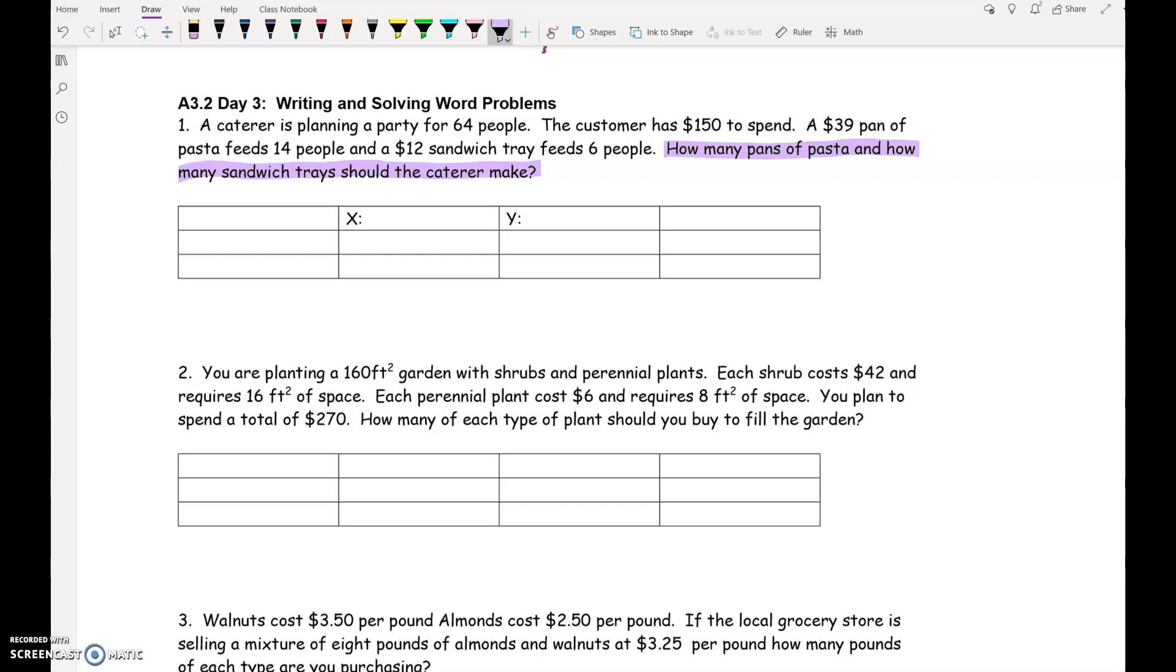Now, in this problem, there are six numbers. Of those six numbers, three of them are about money. Three of them are about something else.